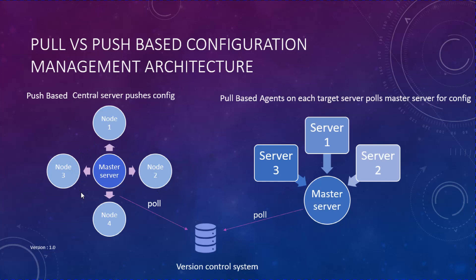There's one more entity worth discussing: a version control system, for example Git. This version control system helps you version control your code and makes it easy to roll back your changes. In development environments, all the code and configuration will be stored in this version control system, and the master servers — whether push-based or pull-based — will continuously pull the version control system for any changes.